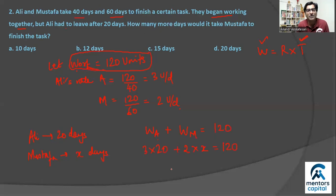We can solve this equation. 3 into 20 is 60, so 120 minus 60 is equal to 60 units. So if 2x is equal to 60, x will be 30 days. So Mustafa will work for 30 days, and out of those first 20 days Ali also works. So question is how many more days will it take? So Mustafa after Ali leaves will take an extra 10 days to finish the job. That's option A.